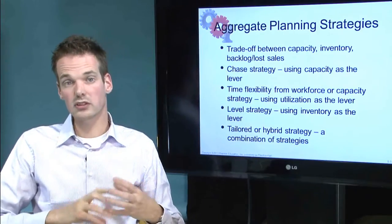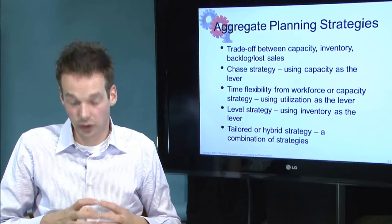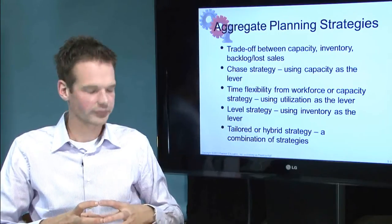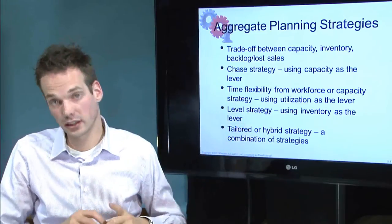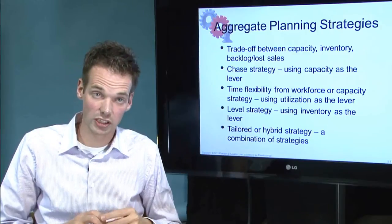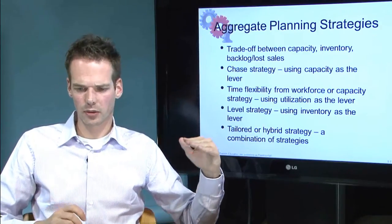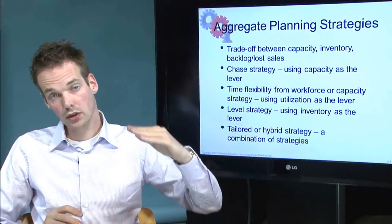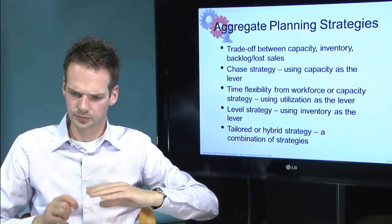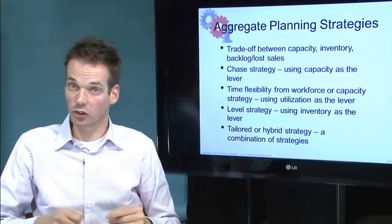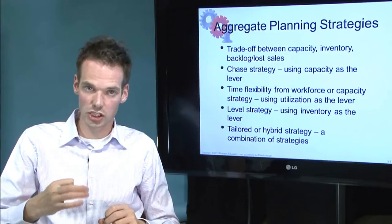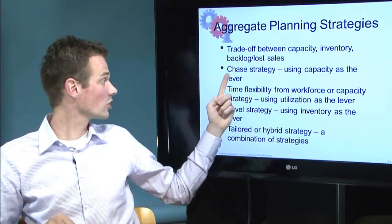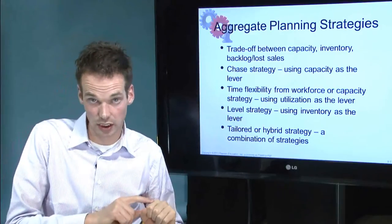It is important to think about strategy. The book identifies three strategies. The first is the chase strategy, the second is time flexibility, and the last is the level strategy. In a chase strategy, the capacity in machinery and/or labor force moves one-to-one with demand. So when demand rises, capacity rises also. You can remember it because chase has capacity — CC, chase capacity.